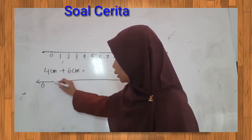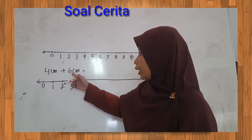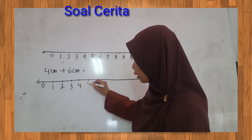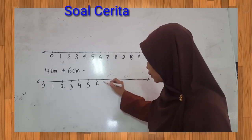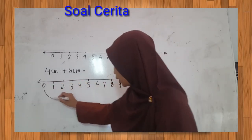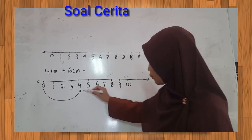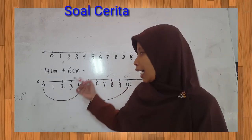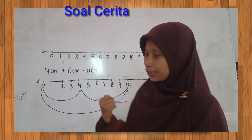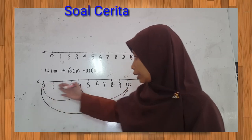Oke, kita gambar sebuah garis bilangan. Mulai 0. Adi membeli 4 cm, maka kita hitung: 1, 2, 3, 4. Kemudian beli lagi sebanyak 6 cm, kita lanjutkan mulai dari 4: 5, 6, 7, 8, 9, 10. Maka total tali yang dibeli Adi adalah sebanyak 10 cm. Kalau nanti mengerjakan soal cerita dan diminta untuk membuat garis bilangan, kita buat garisnya seperti ini.